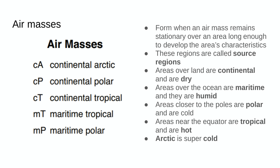Air masses are a lot like accents. If you met someone from another country like England, one of the first things you'd notice would be their accent. We get accents from living in a particular place for a certain amount of time — we take on the accent of that location. It's the same with air masses. When an air mass is in a particular area for long enough, it'll take on the characteristics of that location. Those locations are called source regions.